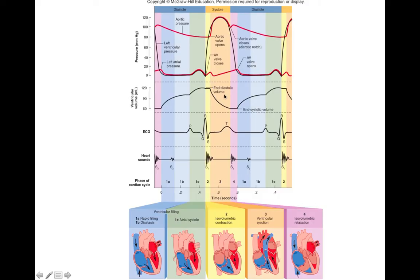End diastolic volume and end systolic volume both refer to how much blood is in the ventricles. If we look at pressure, we see that as the ventricles are contracting, this black line showing left ventricular pressure is going way up — and that makes sense. They're completely filled with blood, they're squeezing, the heart muscle is contracting. Especially before we have any blood moving out, you have quite a lot of pressure being built up. We need to build up enough pressure in order to force open those semilunar valves guarding the way into the aorta and the pulmonary trunk.